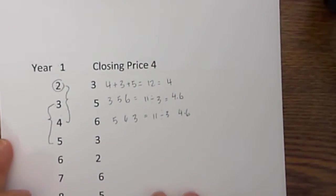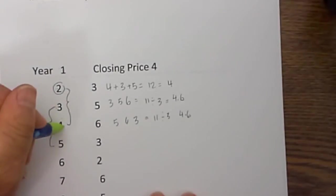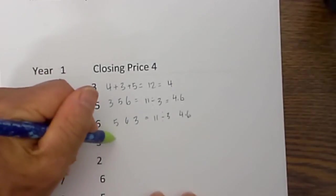And then you repeat this process. So for year 5 it will be this year, this year, and this year. So I will draw a little bracket around it and that will give you 6, 3, and 2.